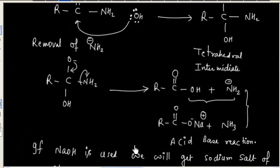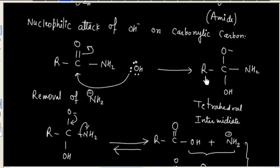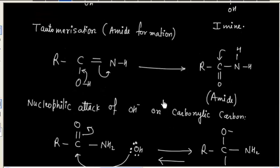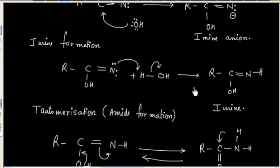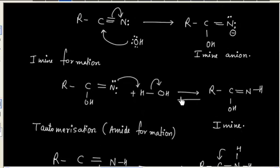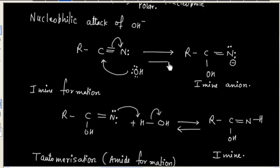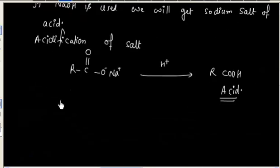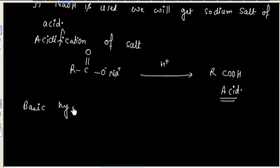Now, an important point is all these steps are reversible. That is, acid can react with NH2- to generate this tetrahedral intermediate, and the tetrahedral intermediate can lose OH- to generate amide. Amide can tautomerize to give imine, and imine can lose H+ to give imine anion. Imine anion can further form nitrile. So all these steps are reversible. We can say basic hydrolysis of nitrile is reversible in nature.